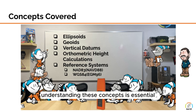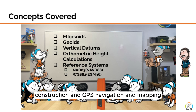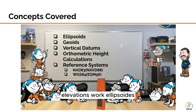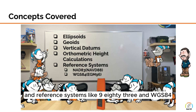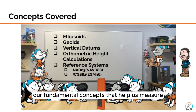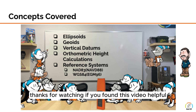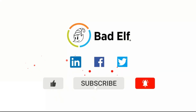Understanding these concepts is essential for applications like surveying, construction, and GPS navigation and mapping, where accurate elevation data is vital. I hope this gives you a clearer understanding of how elevations work. Ellipsoids, geoids, vertical datums, orthometric height calculations, and reference systems like NAD83 and WGS84 are fundamental concepts that help us measure and interpret the Earth's surface accurately. Thanks for watching. If you found this video helpful, don't forget to like and subscribe.